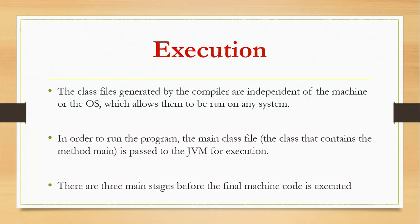So what happens during execution? In order for your program to run, the main class file — the class that contains the main method — is passed to the Java Virtual Machine to be executed. During that execution, your program is going to go through three stages. There are three main stages before the machine code is actually executed, that is, before you can see the output of your program on your screen or Java console.